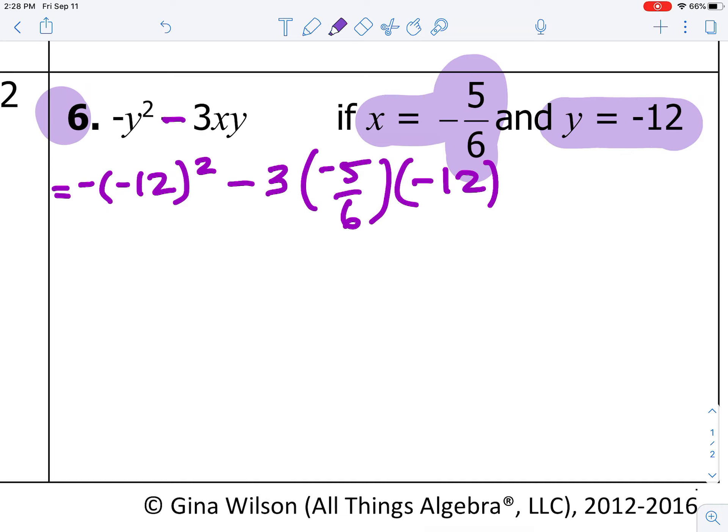From here, order of operations. The first operation that we need to do for this problem is exponents. So, you're squaring a negative 12. This means you have negative 12 times negative 12. And, negative times a negative is positive. 12 times 12 is 144. So, I'm replacing negative 12 squared with 144.